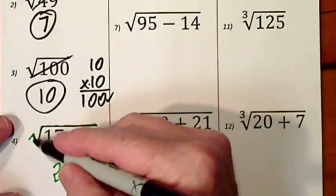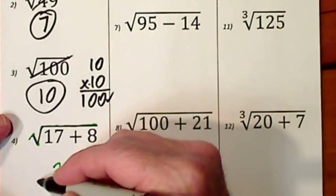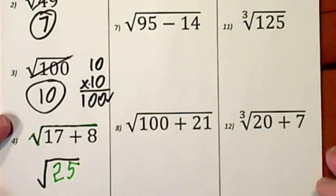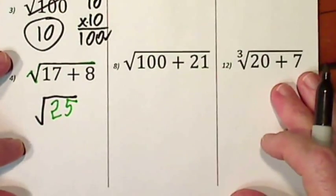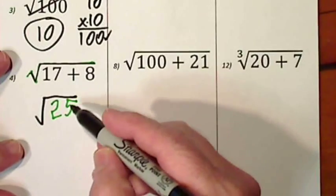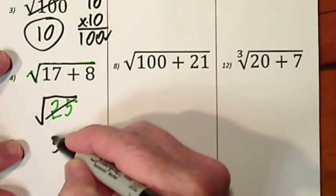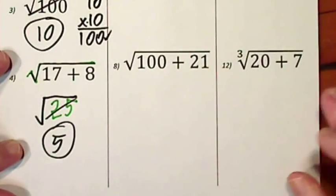But the radical sign has not been used yet, so it comes down. And the square root of 25 is 5. So that's your answer.